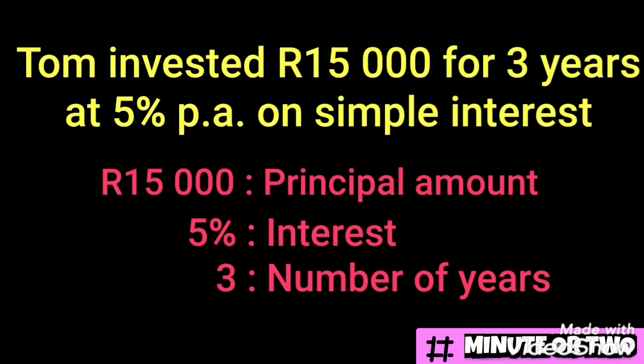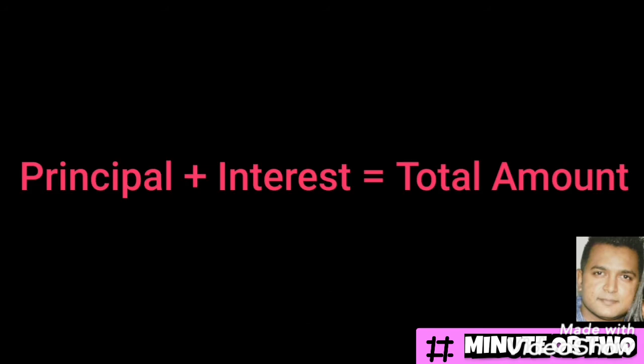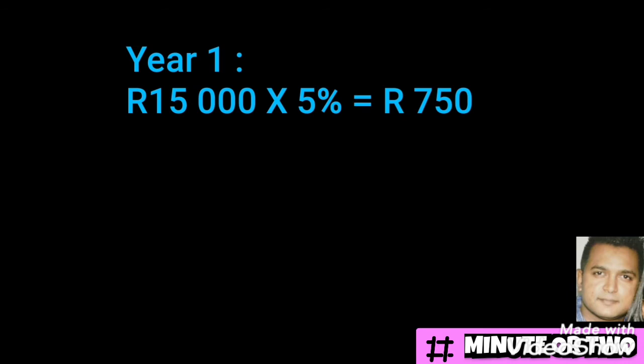There are two types of questions that can be asked, and we will look at both. The first type is to calculate the amount that Tom will have at the end of three years — meaning what he will have altogether after he invests this money. To work out what he has at the end of three years, we need the principal amount of 15,000 plus the interest he will get for each year.